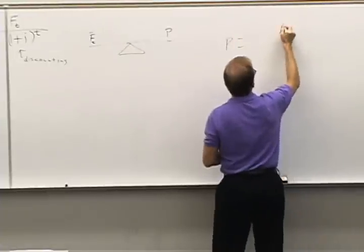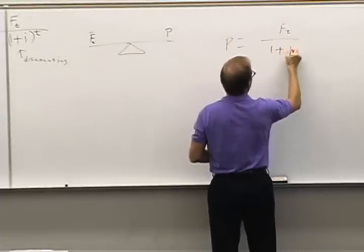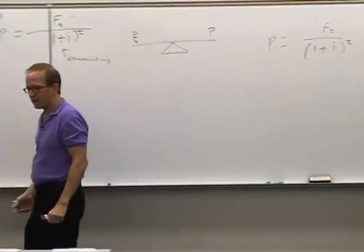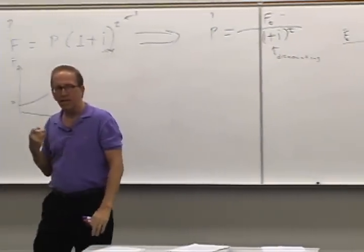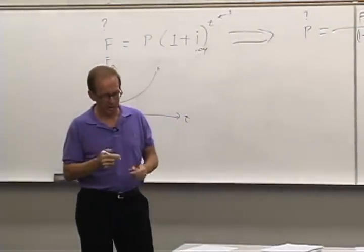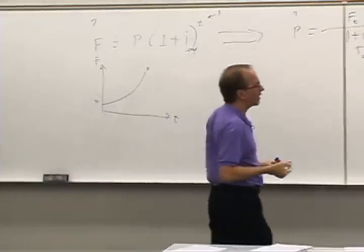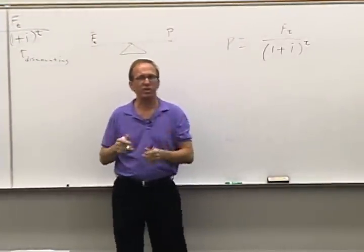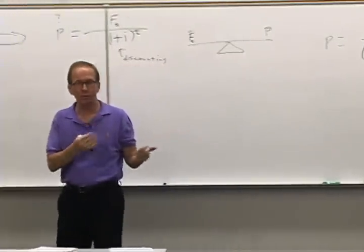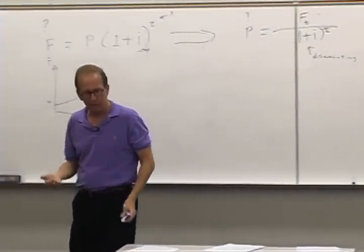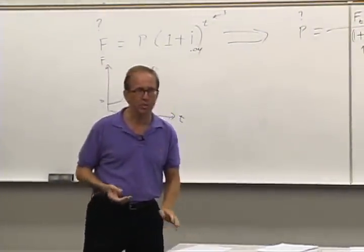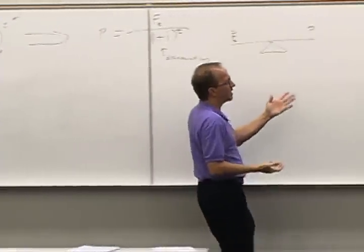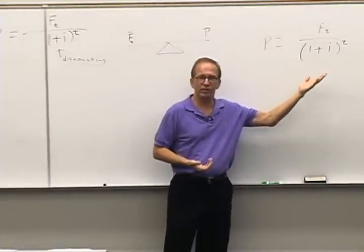Present value is the future promise divided by 1 plus i to the t. This is a fundamental tool — as far as I know, all investments have this kind of formula applied to them. You don't have to use it, but then you don't have to make wise investments. If you want to make a wise investment, this is the analysis that goes along with wise investing.